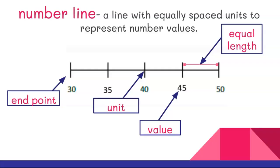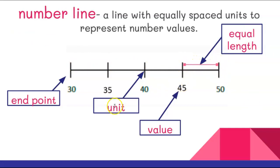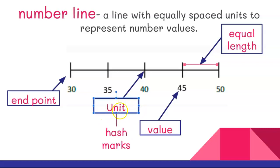Before we get started, we have to talk about some vocabulary you're going to hear during this lesson. The first one is number line — a line with equally spaced units to represent number values. These spaces and hash marks are equally spaced, meaning the distance between them is equal. These little lines can be called units or hash marks. Make sure you know both terms, as your problem set today uses hash marks.